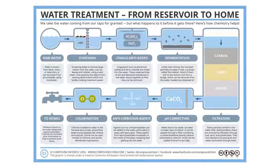Once sedimentation has occurred, the water passes through a filter, which can be made of carbon, sand, or gravel. This mimics what happens with groundwater as it passes through different layers of dirt, gravel, sand, and rock to reach the water table — it's an early filtration system. We then adjust the pH by adding chemicals to raise or lower it depending on the levels present.